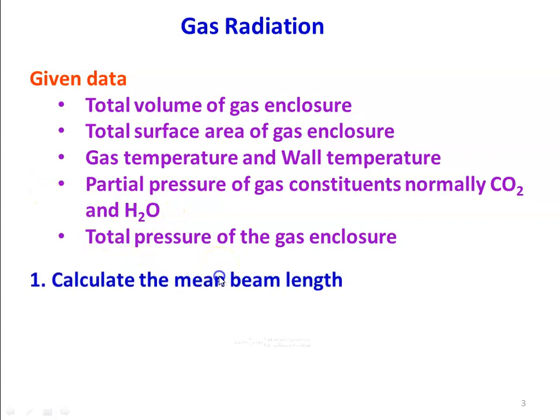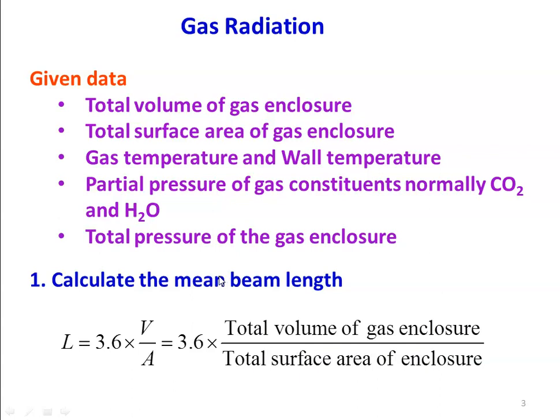The first step is to calculate the mean beam length. L is defined as 3.6 times V divided by A, where V is the total volume of the gas enclosure and A is the total surface area of the enclosure. So L = 3.6 × V/A.